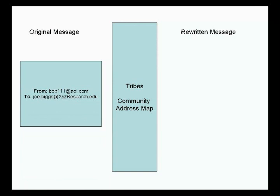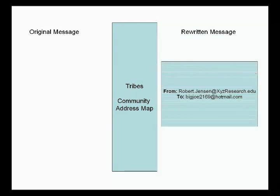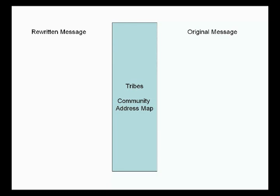As the message passes through the Tribe's email system, Bob's address is rewritten to his standardized community address, robert.jensen at xyzresearch.edu. When Joe gets the message, this is what he will see in the from portion of the header. Simultaneously, the Tribe's community address map translates Joe's community address to his private one on file, bigjoe2169 at hotmail.com, and the message is delivered to that address.